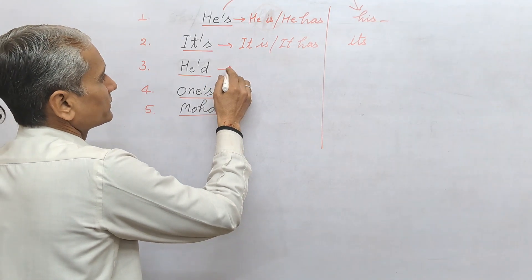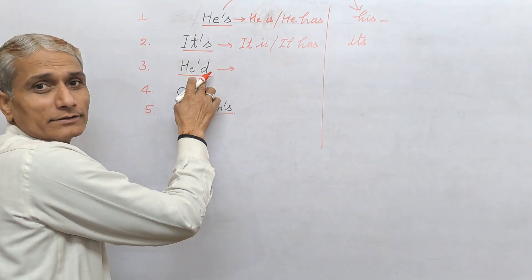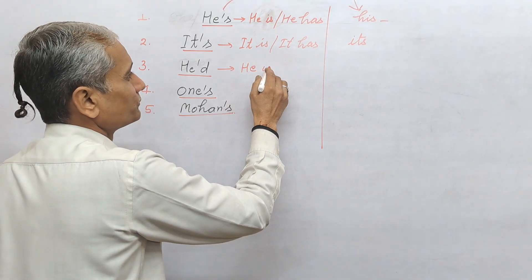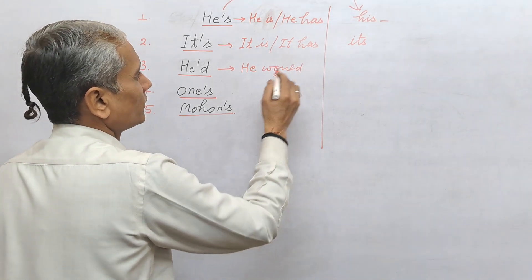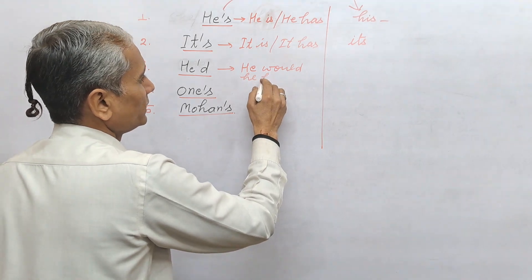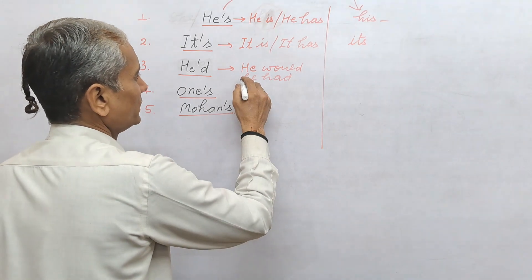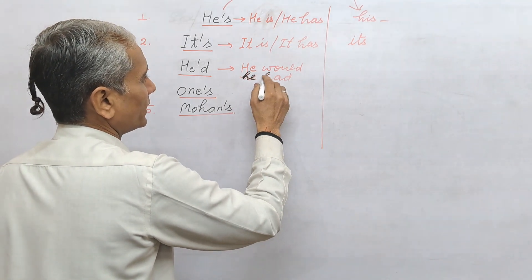He'd. It means he would or he had. He would or he had.